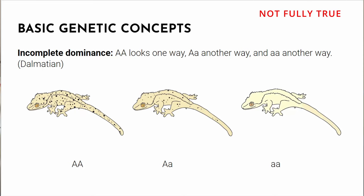Incomplete dominance is the term for mutations that have something in the middle — big A/big A is one thing, big A/small a is another thing, and small a/small a is yet another thing. An example would be the Dalmatian gene: big A/big A being super Dalmatian, big A/small a being normal Dalmatian, and small a/small a being not Dalmatian. However, this gene is not proven to be incomplete dominant — there is thought to be some incomplete dominance, with more spots being the super form, but it's not 100% proven.